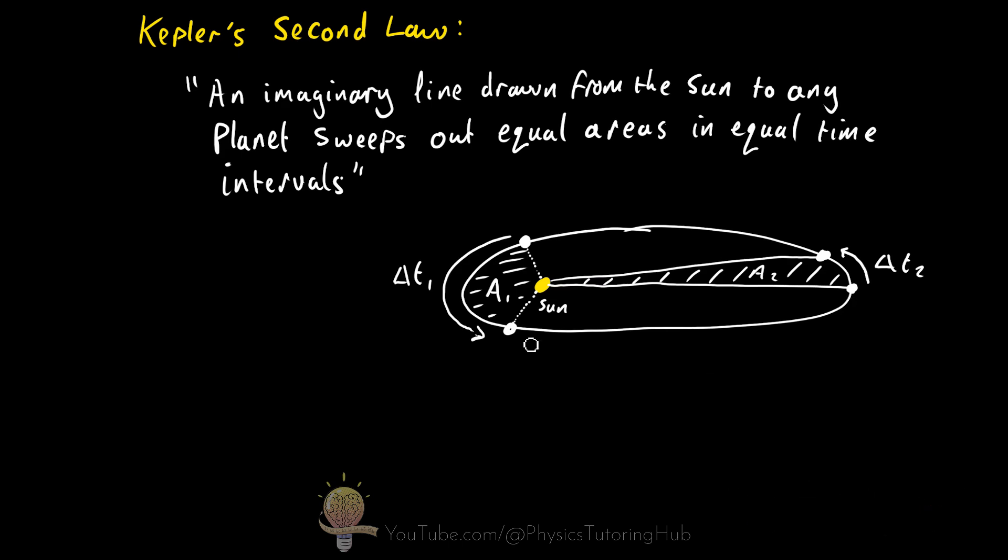So let's break this down. This diagram shows a planet orbiting the Sun at different instances in time. When the planet is close to the Sun, as it is here, this imaginary line sweeps out an area of A1 in this time interval, delta T1.